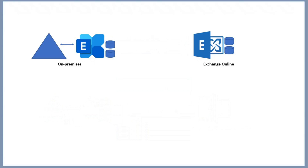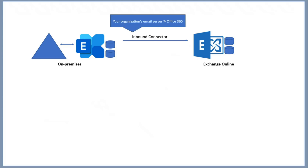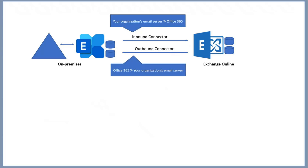The second scenario where you need Mailflow Connectors in Exchange Online is if you have an on-premises Exchange Server and an Office 365 tenant, where some mailboxes are hosted on-premises and some are hosted in Office 365, and you want to send emails between on-premises users and Exchange Online users. In this scenario, you also need two connectors. It is always recommended to deploy Exchange Hybrid using HCW, which automatically creates two connectors in Exchange Online. If you do not want Exchange Hybrid deployment, you need to create the two connectors manually.